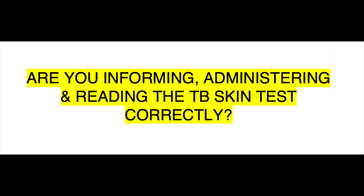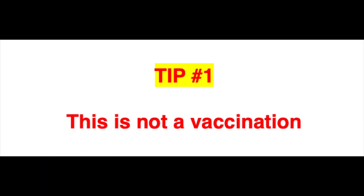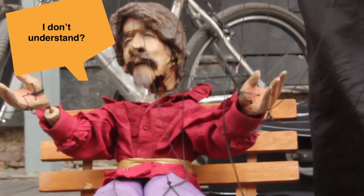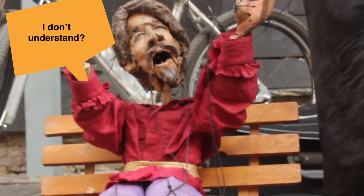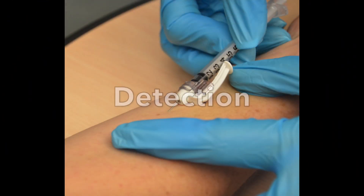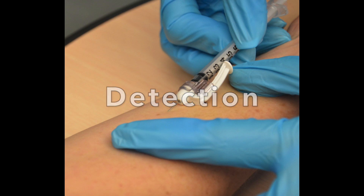Are you informing, administering, and reading the TB skin test correctly? Let's talk about tips on administering. Tip number one: this is not a vaccination. I have heard some nurses use this terminology when explaining a TB skin test to a patient. It gives the patient incorrect and inaccurate information about this test. You really don't want your patient thinking that this is a test that is going to prevent TB. Instead, the patient should know and understand that this test is one of the ways that we can help to detect TB.